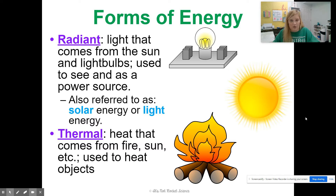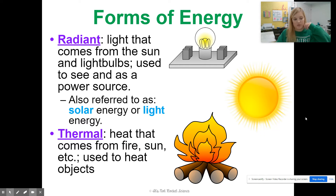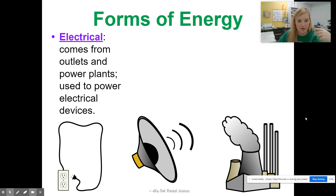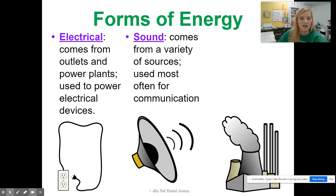You can imagine fireworks when they go up in the air and go kaboom — they give off radiant energy because you can see them, and also thermal energy because of the explosion. Then we have electrical energy, which comes from anything you can plug in: outlets, power plants, powering our electrical devices — everything keeping your computer, phone, or TV running. And then sound energy comes from a variety of sources. Anything that makes sound is using sound energy.